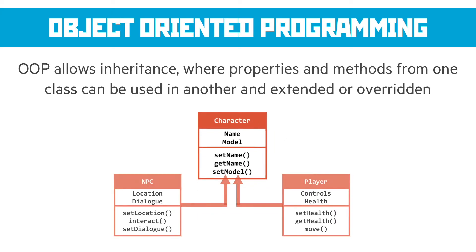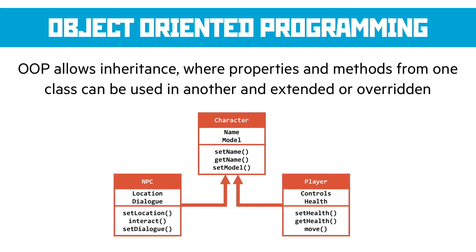Inheritance is where properties and methods can be used from previous classes. In this example we've got two classes that inherit from a base class — they get the properties and methods from the class they inherited from and we can extend or override them. So the player class here has controls and health itself, but also inherits name and model. Similarly for methods, it has set health, get health, and move, but has also inherited set name, get name, and set model. This is a nice way of creating classes that are basically the same as a previous one but with a few changes.